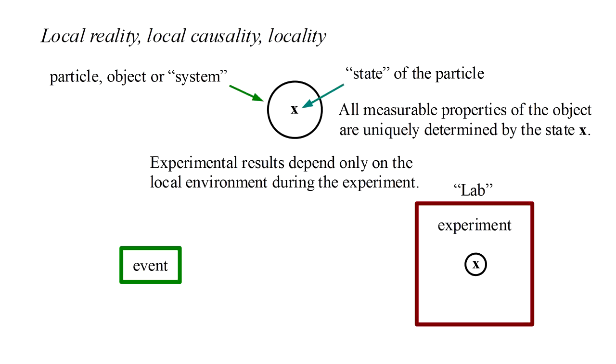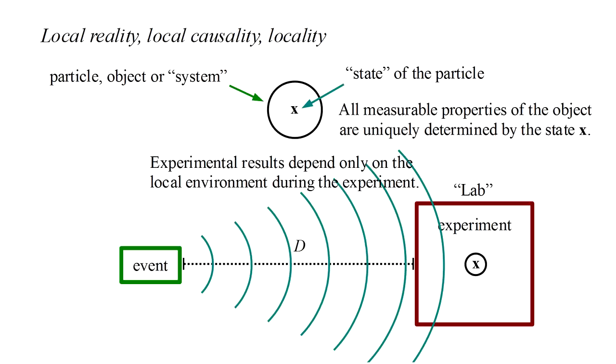Now, a remote event, say a distance d away, can certainly have an effect on our experiment. But it does so by producing some disturbance which propagates through space at no faster than the speed of light. This disturbance can eventually enter the laboratory where it becomes part of the local environment during the experiment. So it's still true that the experimental results depend only on the local environment. The distant event can have no effect on the experiment in less than d over c seconds. In particular, it cannot instantaneously influence our experiment.